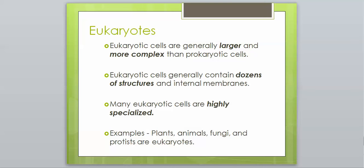The organelles are going to be just parts like many organs that help the cell function. Many eukaryotic cells are highly specialized which means they have a very specific job and have evolved to be pretty complex. Examples: plants, animals, fungi which are mushrooms, and protists are all eukaryotes.